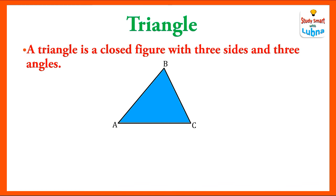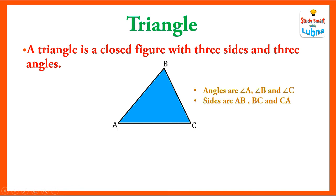This is an example of a triangle. Here you can see its three angles are A, B and C. And its three sides are AB, BC, and CA or AC. So here angles are angle A, angle B and angle C. This is the symbol for angle. And sides are AB, BC and CA or AC.